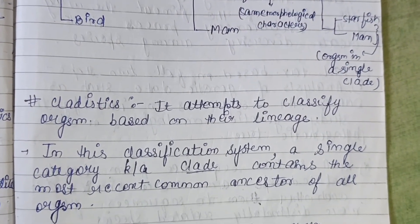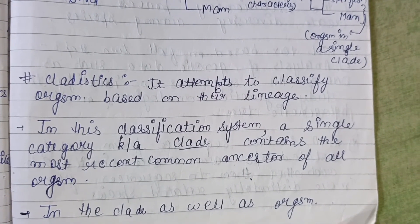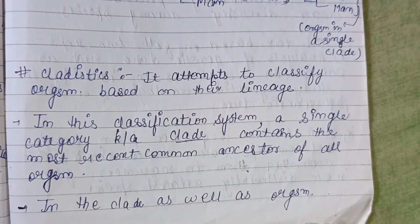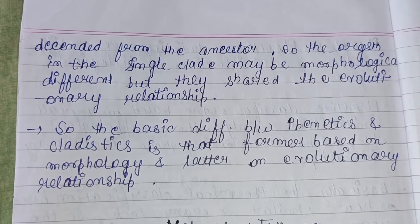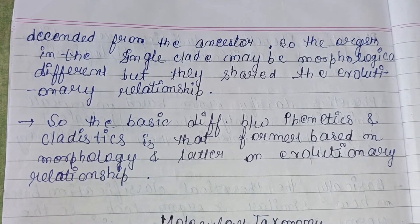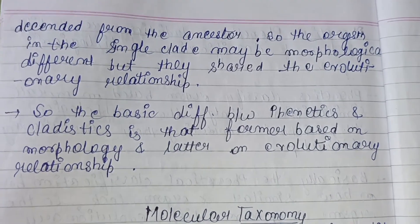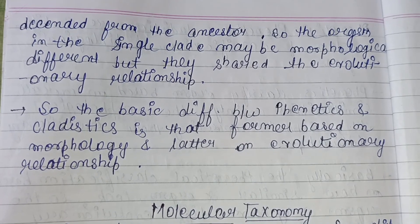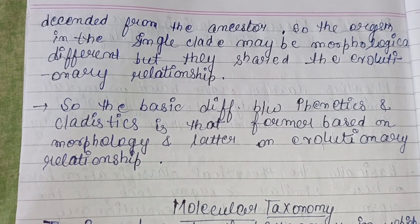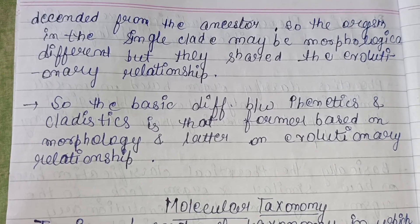According to cladistics, jellyfish is far distant while starfish and humans are close — all grouped in a single clade. Cladistics attempts to classify organisms based on their lineage. A single category known as a clade contains the most recent common ancestor of all organisms in the clade, as well as all organisms descended from that ancestor. Organisms in a single clade may be morphologically different but share an evolutionary relationship. In summary, phenetics is based on morphology, while cladistics is based on evolutionary relationships. That is all about numerical taxonomy — hope you liked this video, please subscribe to my channel.